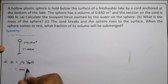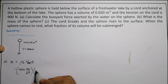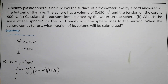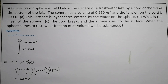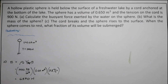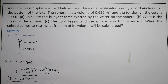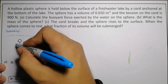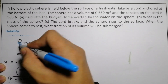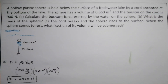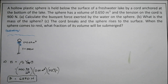The volume displaced is the space occupied by the sphere, which is the given 0.65 cubic meters. The density of water is a constant and gravity we know, so we can solve by direct substitution. Substituting: 1000 kg/m³ times 0.65 m³ times 9.8 m/s² gives us 6370 newtons. That is our buoyant force, acting upward on the hollow plastic sphere.